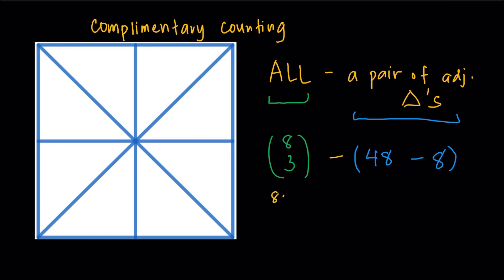So 8 choose 3, that's 8 times 7 times 6 divided by 3 times 2 times 1. Luckily we could cancel out the six. So 8 times 7, that's going to give me 56 minus 48 minus 8, that's going to give me 40. We're going to get the final answer here of 16.